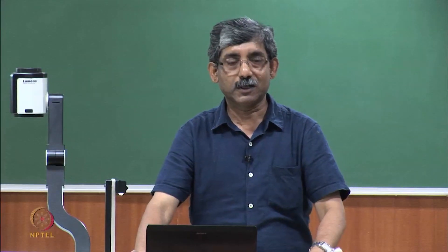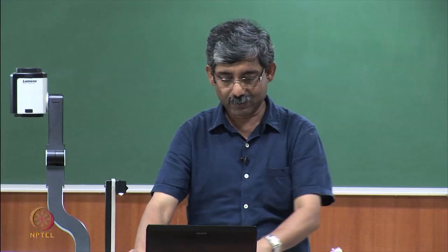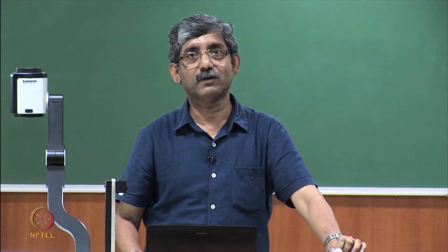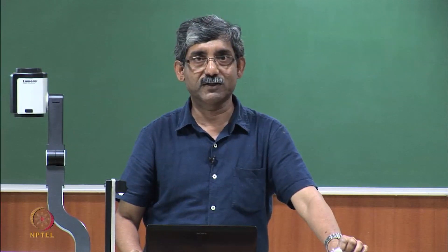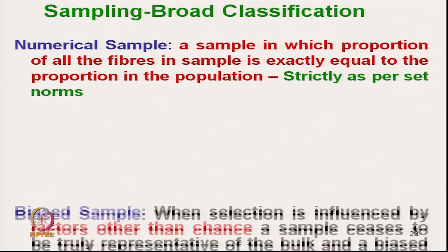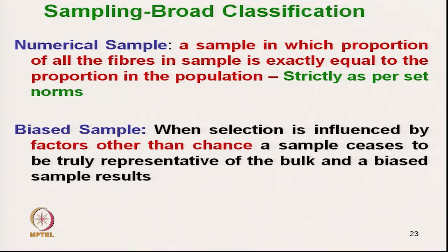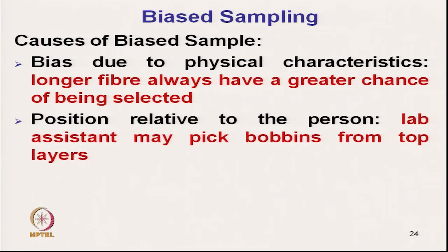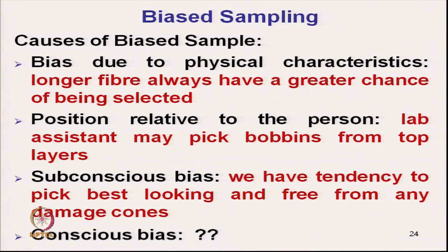Hello everyone. We will continue with the sampling of textile material. Last class we discussed the broad classification of sampling — broadly classified into two categories: numerical sampling and biased sampling. Biased sampling is mainly length biased, and the causes of biasedness we discussed are due to physical characteristics of material, position relative to the person, subconscious biasness, and conscious biasness.